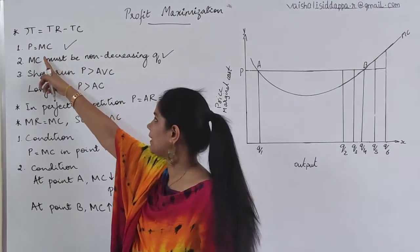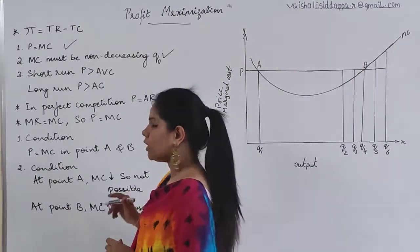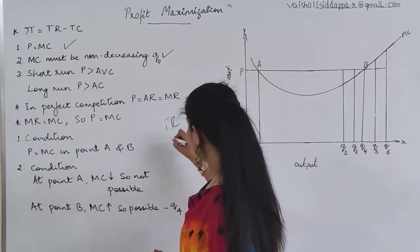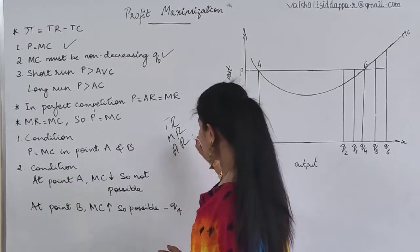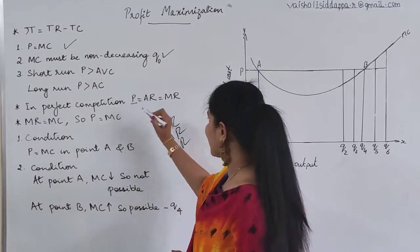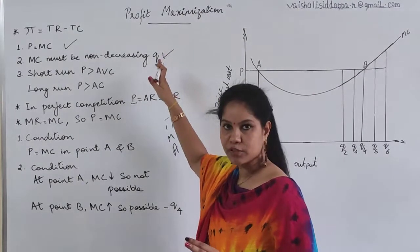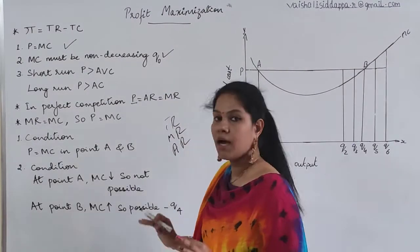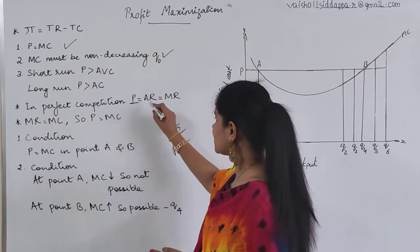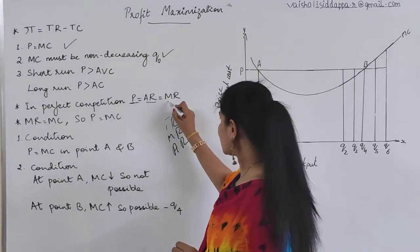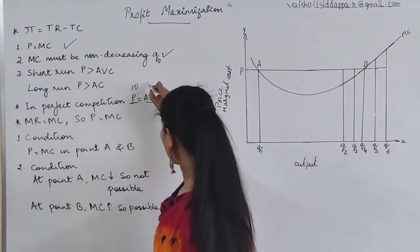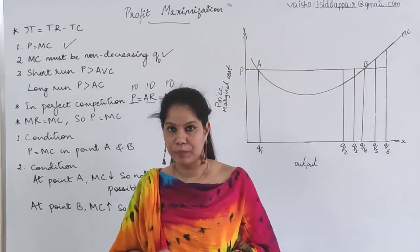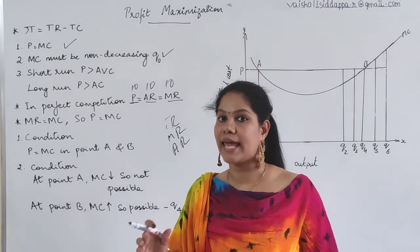Let me talk about the first condition: P should be equal to MC. In the previous class, we already discussed total revenue, marginal revenue, and average revenue. From that, we know that in perfect competition — which is the chapter we are in — price is always equal to AR, and AR is always equal to MR. So if price is 10 rupees, average revenue is also 10 and marginal revenue is also 10.